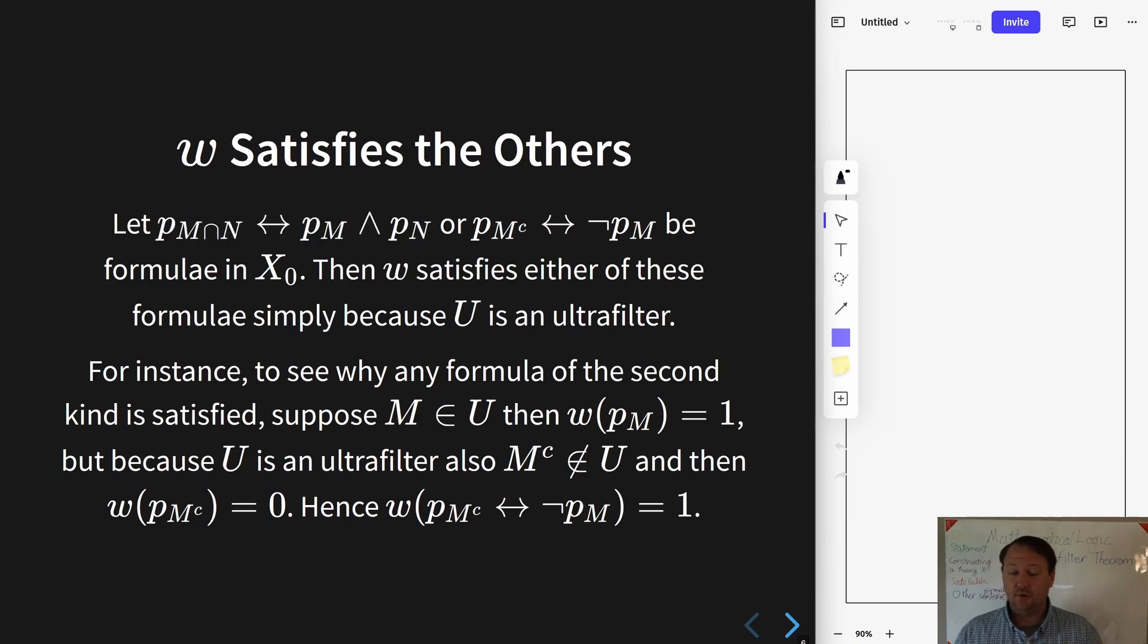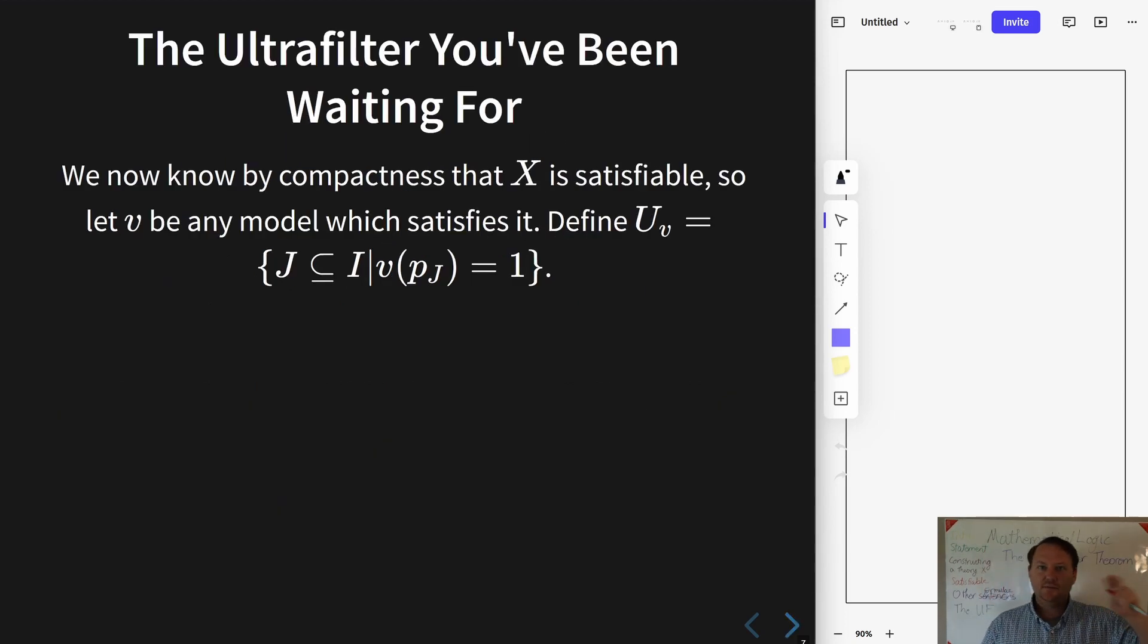So the previous conversation has now established that if X₀ is any finite subset of X, then X₀ is satisfiable. Therefore, X is satisfiable by the compactness theorem. Therefore, we let v be any model for X. We now use v to construct the ultrafilter.